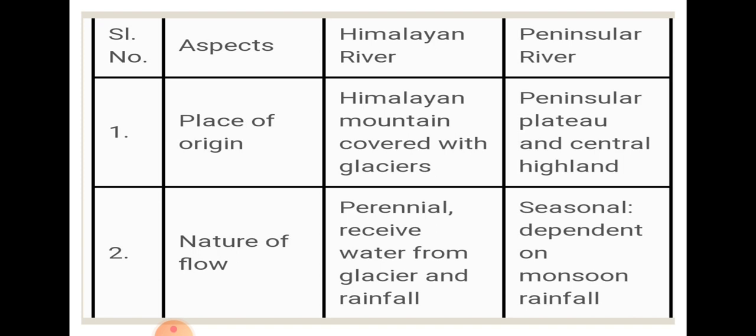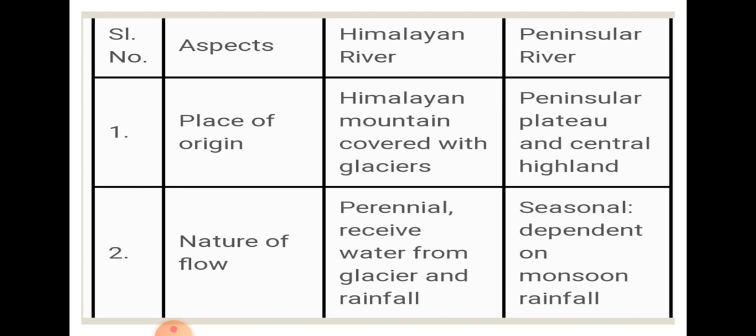The next aspect is nature of flow. Himalayan rivers are perennial because they receive water from both snowfall and rainfall. Peninsular rivers are seasonal rivers because they depend on monsoon rainfall or normal rainfall only.